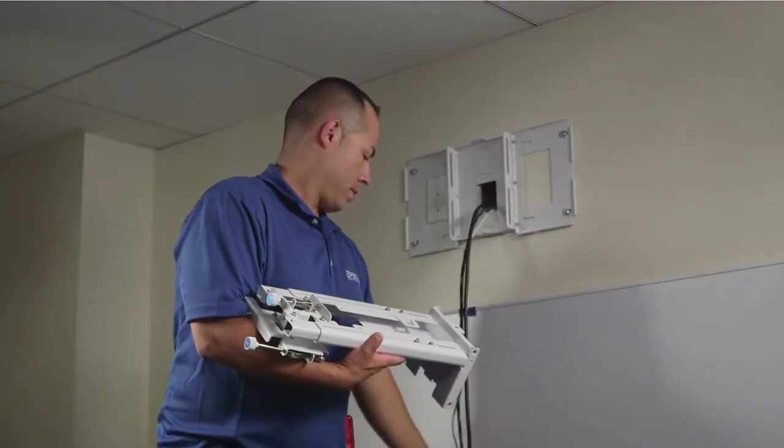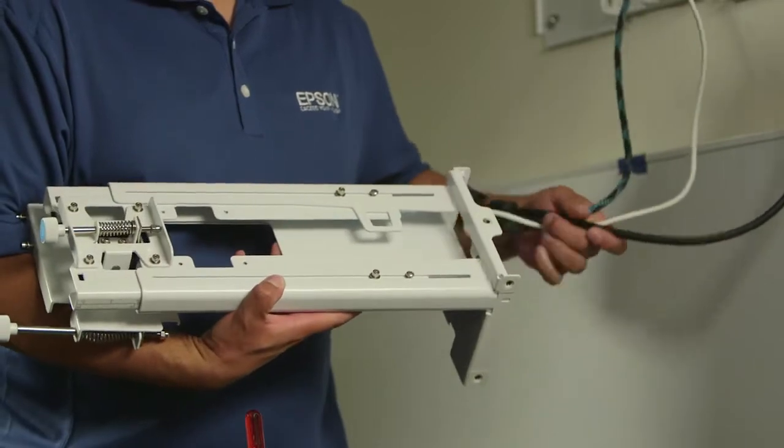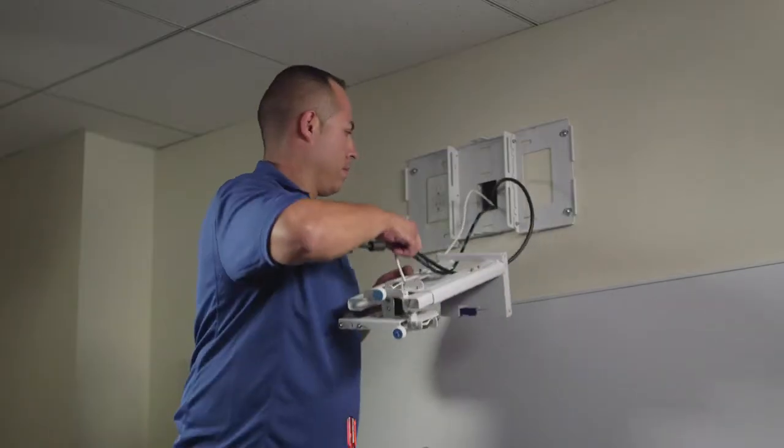It is now time to attach the mount arm to the wall plate. Before doing so, we should pull the cables that we placed in the wall through the mount arm.